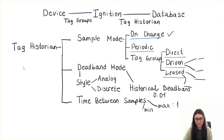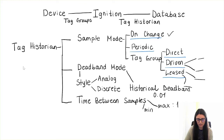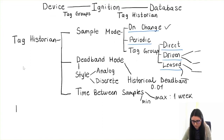So those are the three main settings in the tag historian: sample mode, deadband mode, and time between samples. As mentioned at the beginning, we want to store data in a format that leads to an optimized structure — fast access, efficient SQL queries, and good organization. We don't want to keep all historical data in a single table, as that would lead to enormous amounts of data in a short time. Once we've configured the tag historian settings, we can look at data partitioning and data pruning.